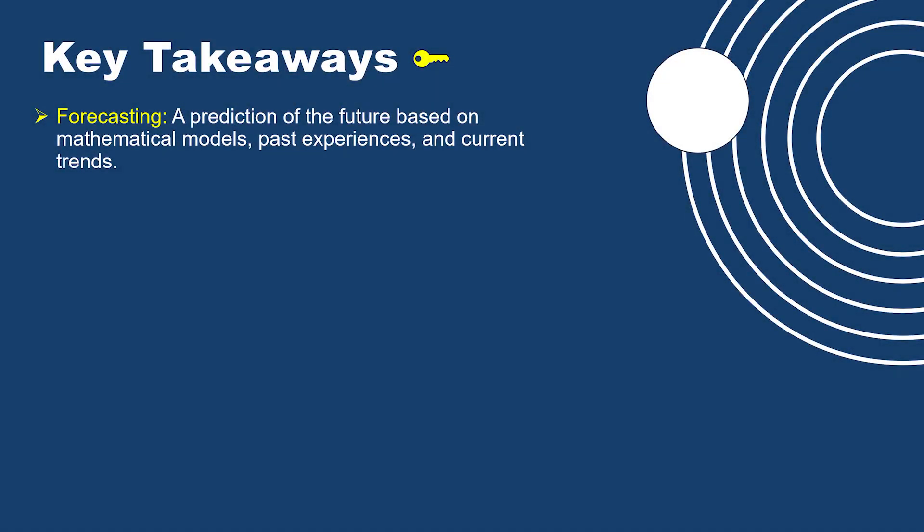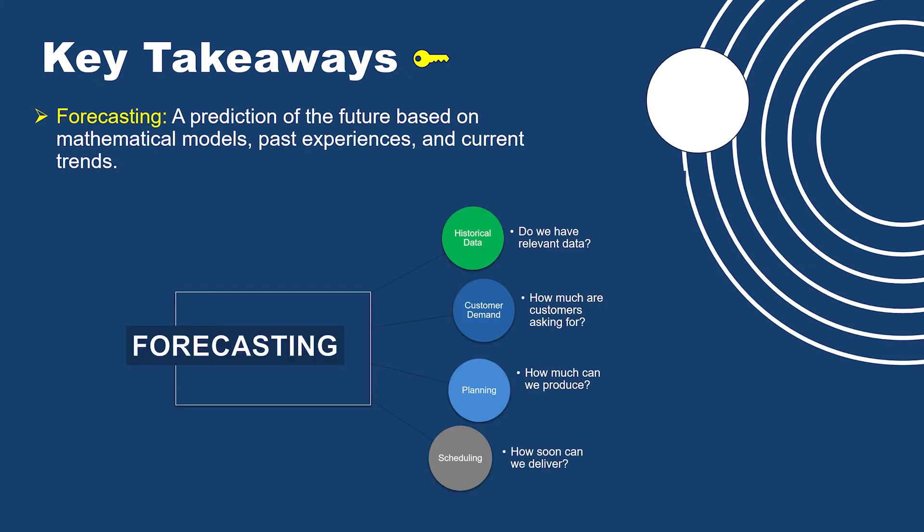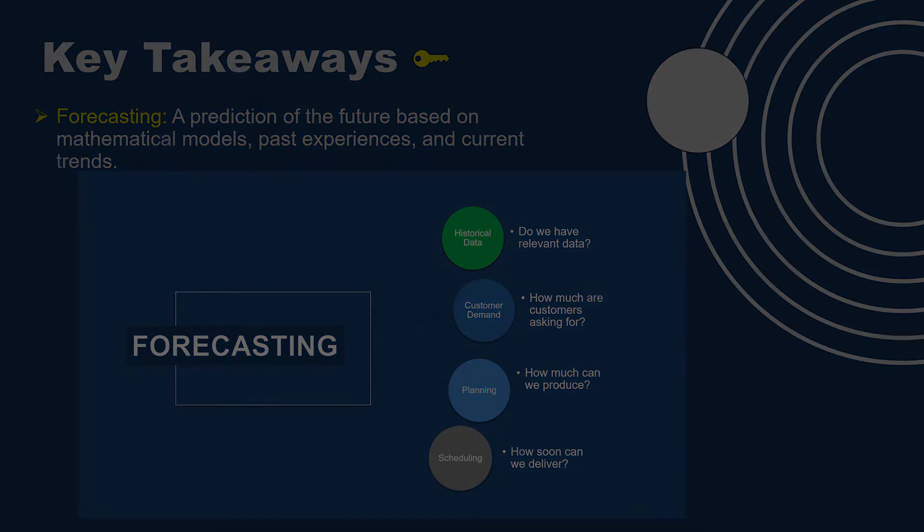Key takeaways: forecasting is just a prediction based on past experiences and customer demand. The important thing is understanding the relationship between customer demand, forecasting, planning, and scheduling.